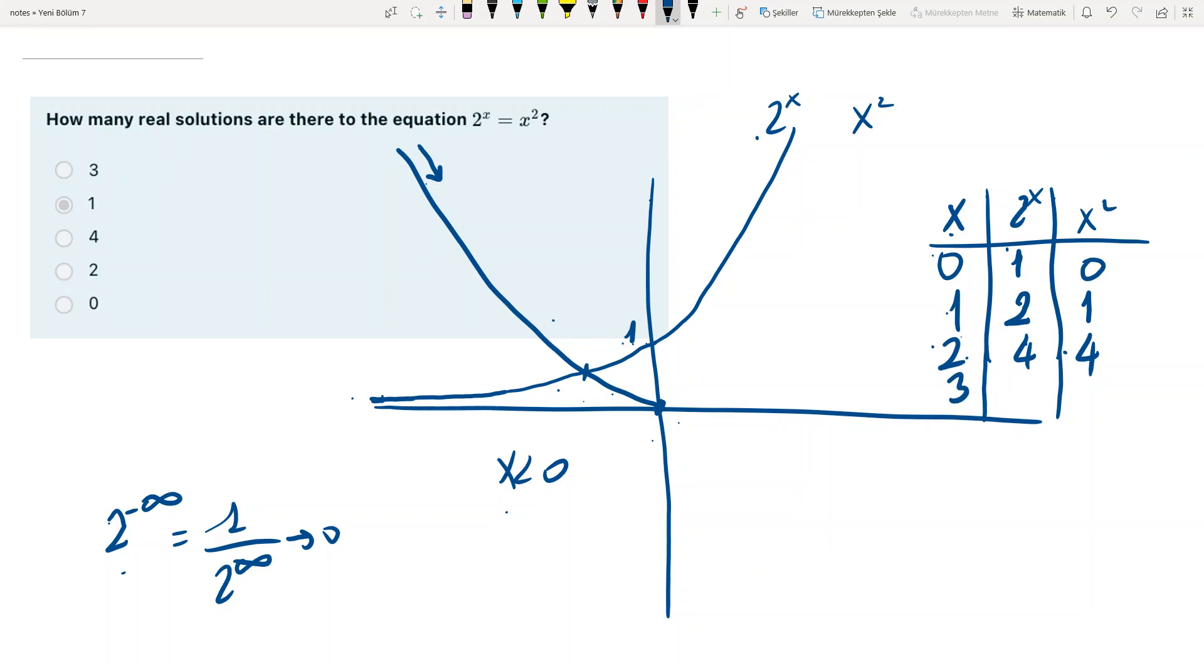When x is 3, 2 to the x is 8, x squared is 9. Now x squared is greater. See that. When x is 4, 2 to the x is 16, x squared is 16 again, second intersection point.